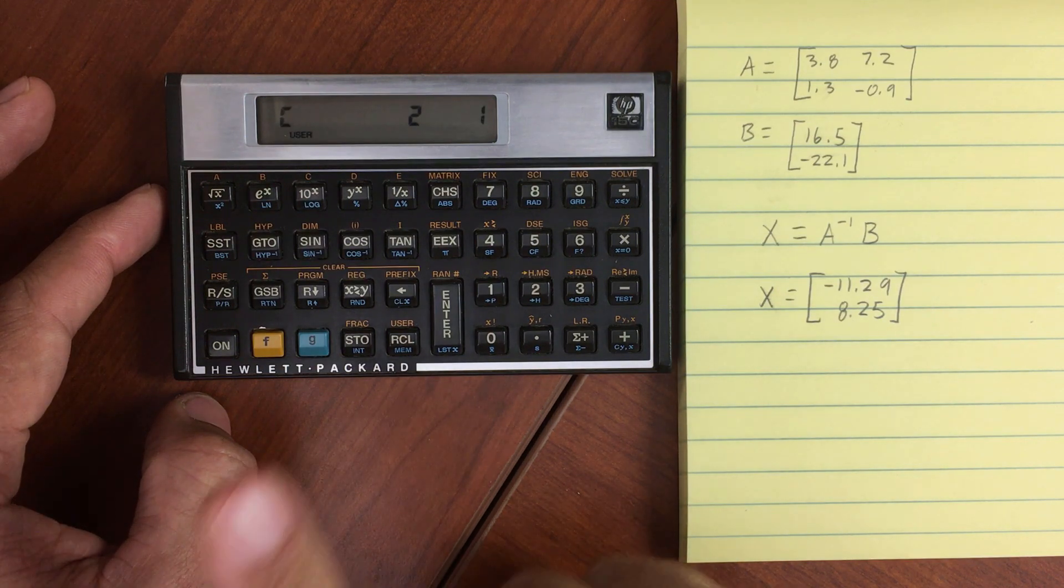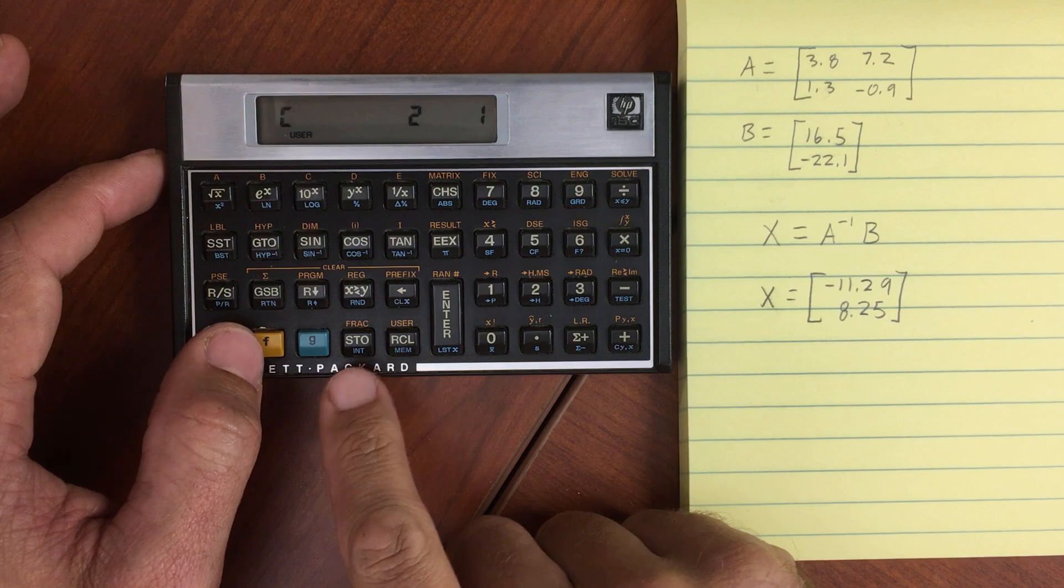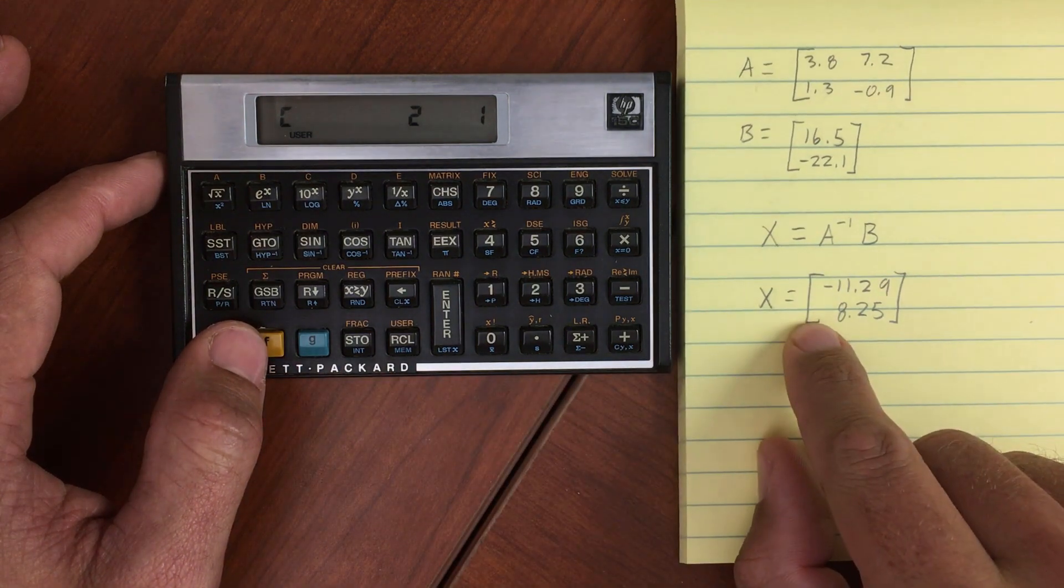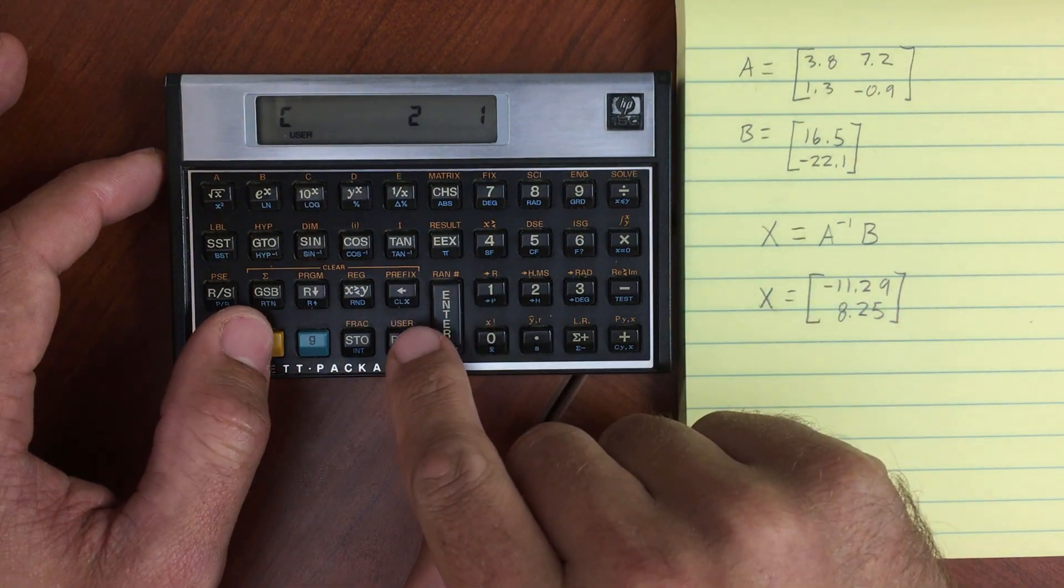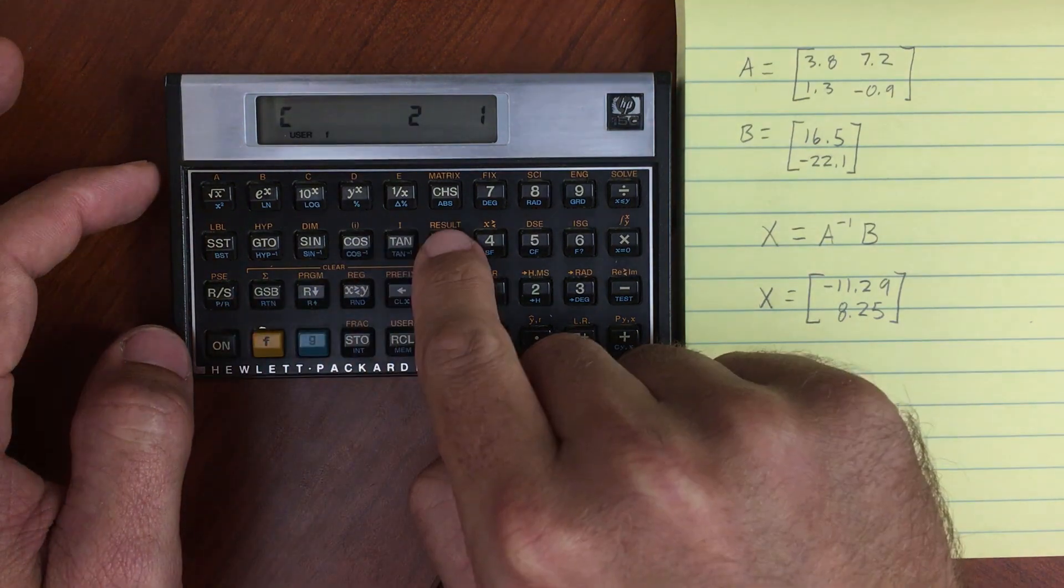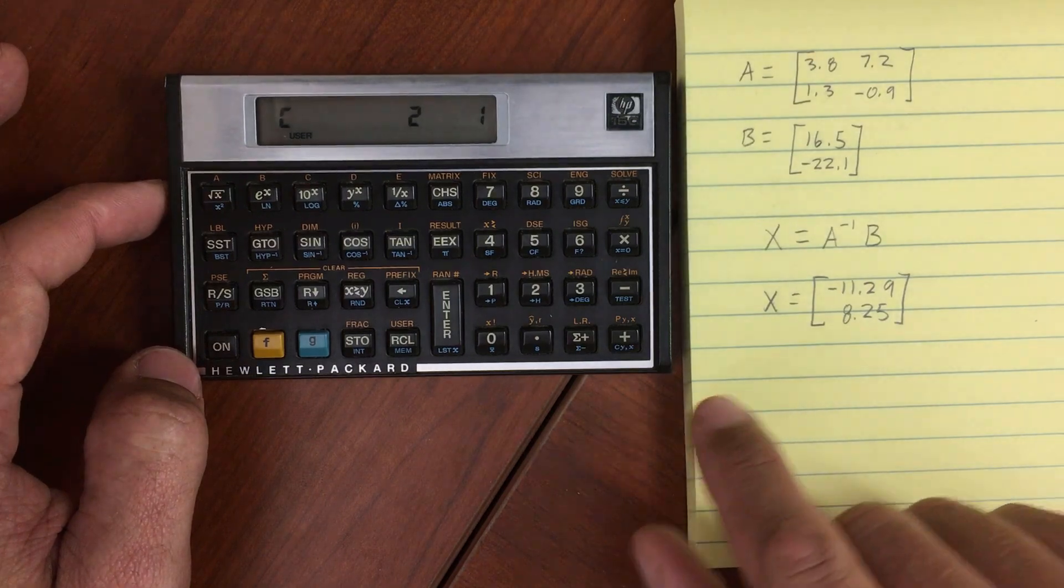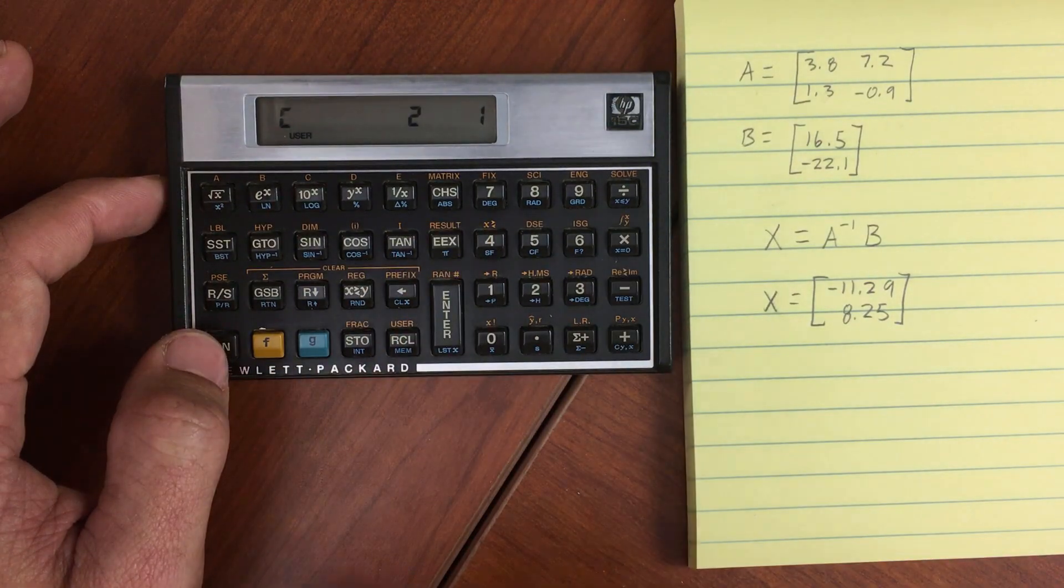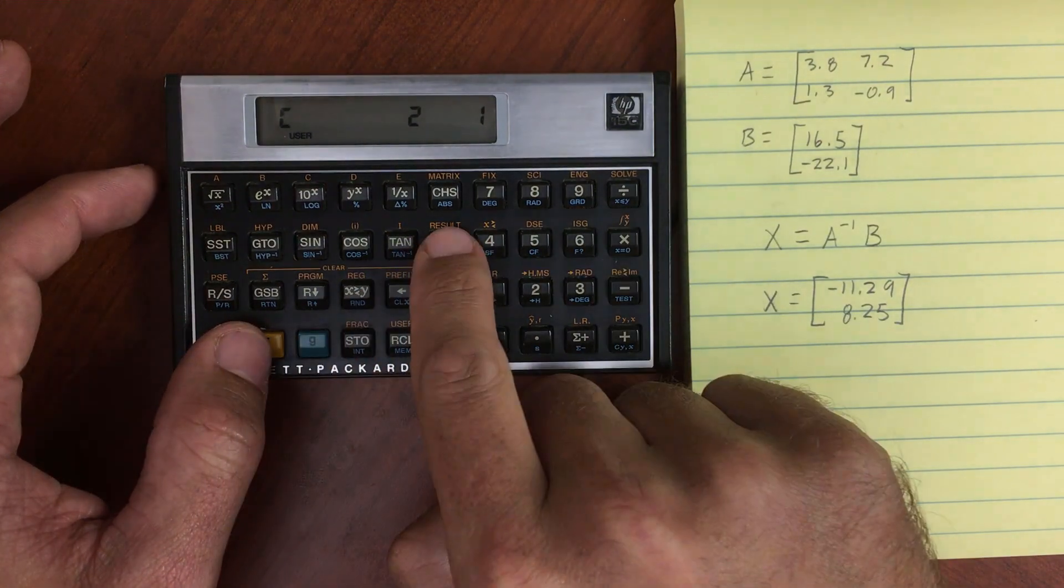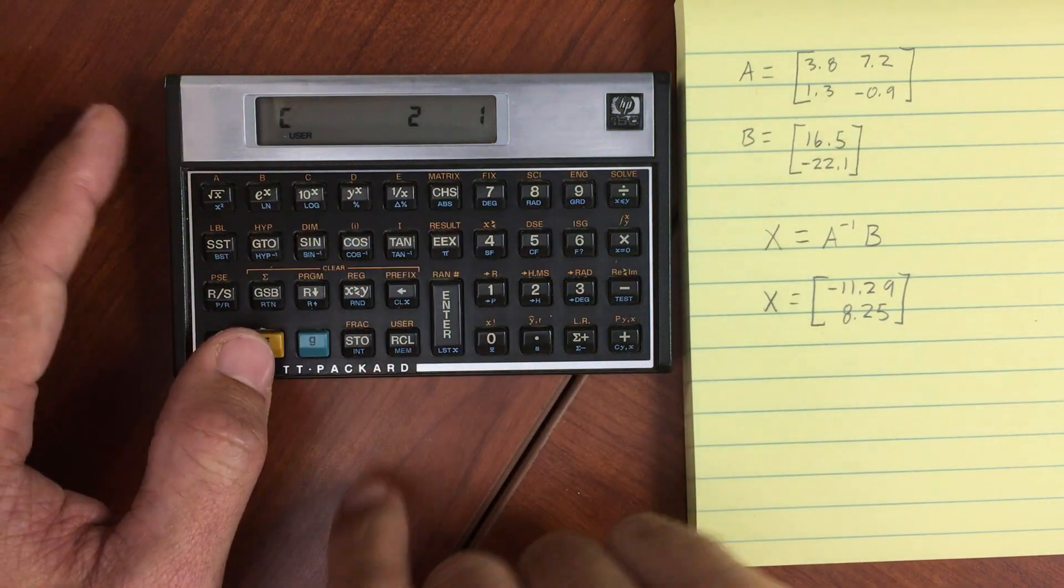And I forgot to mention, so result. Result is something important, too. And I'd already done this previously, so we already had a result in C. But we want to say we want to store the result. Shift, result, and C. Okay. So we've already run it. We've already got the thing. I should have done that before. But I already had matrix C set up.